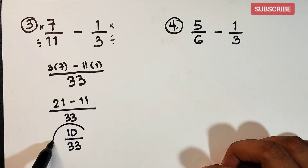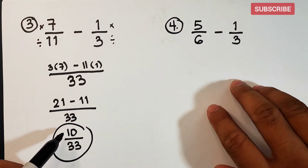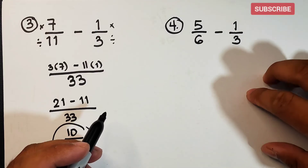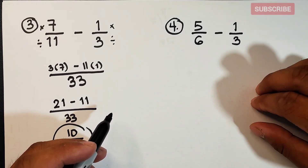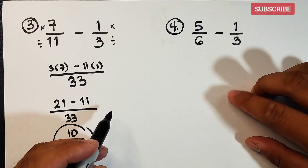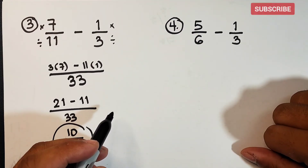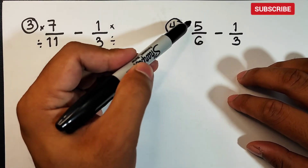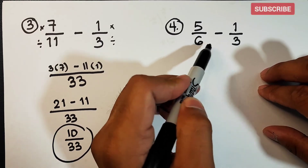Right now we have item number 4. I will allow you to pause the video first and try to answer this on your own. Okay, let's discuss: 5 over 6 minus 1 over 3. The denominators are 6 and 3.